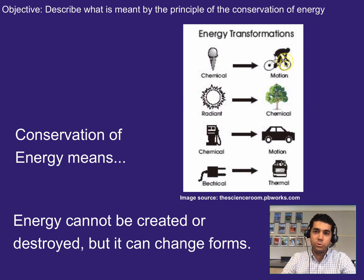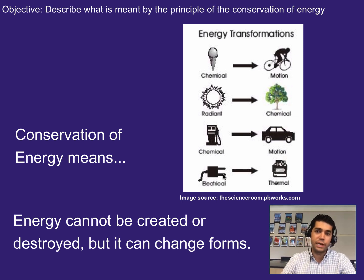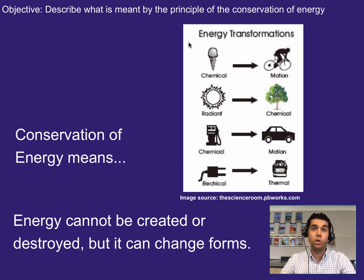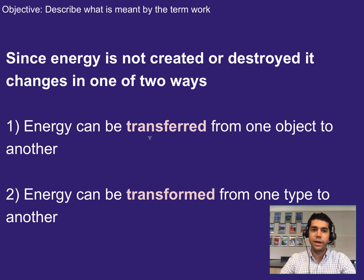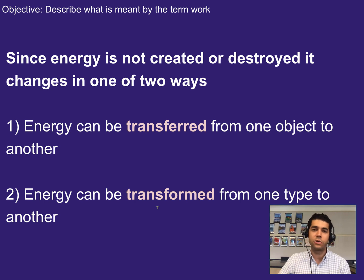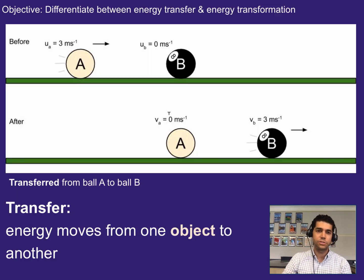Conservation of energy means energy cannot be created or destroyed, but it can change forms. For example, chemical energy in food might turn into motion, radiant energy from the sun might turn into chemical energy through photosynthesis, chemical energy in gasoline might turn into motion, or electrical energy might turn into thermal with an electric stove. Energy changes in one of two ways: it's transferred from one object to another, or it's transformed from one type to another — like a transformer changing form.